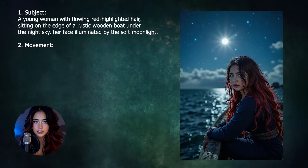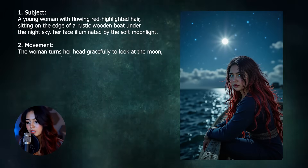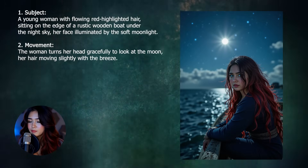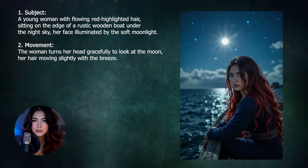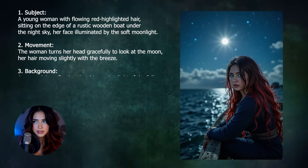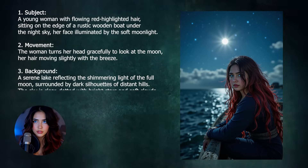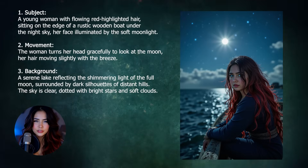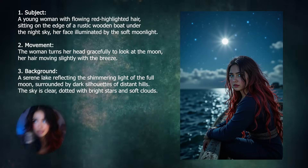Number two, we have to add the action or the movement. So I'll say: the woman turns her head gracefully to look at the moon, her hair moving slightly with the breeze. Next, we have to describe the background. So I'll say: a serene lake reflecting the shimmering light of the full moon, surrounded by dark silhouettes of distant hills. The sky is clear, dotted with bright stars and soft clouds.